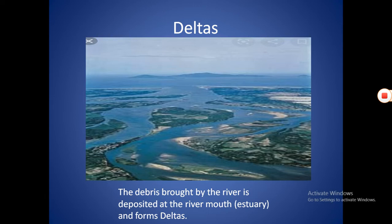Deltas. The place where a river flows into the sea is called the river mouth or estuary. Estuary means river mouth. When the land area at the mouth of the river is at sea level, the flow of water is slow.